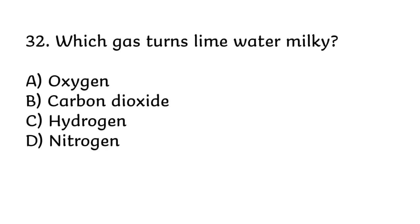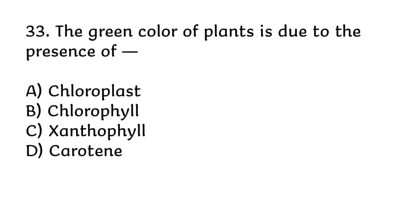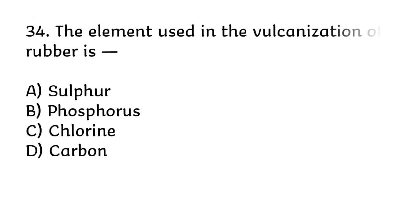Which gas turns lime water milky? Correct answer is B, carbon dioxide. The green color of plants is due to the presence of? Correct answer is B, chlorophyll. The element used in the vulcanisation of rubber is? Correct answer is A, sulphur.